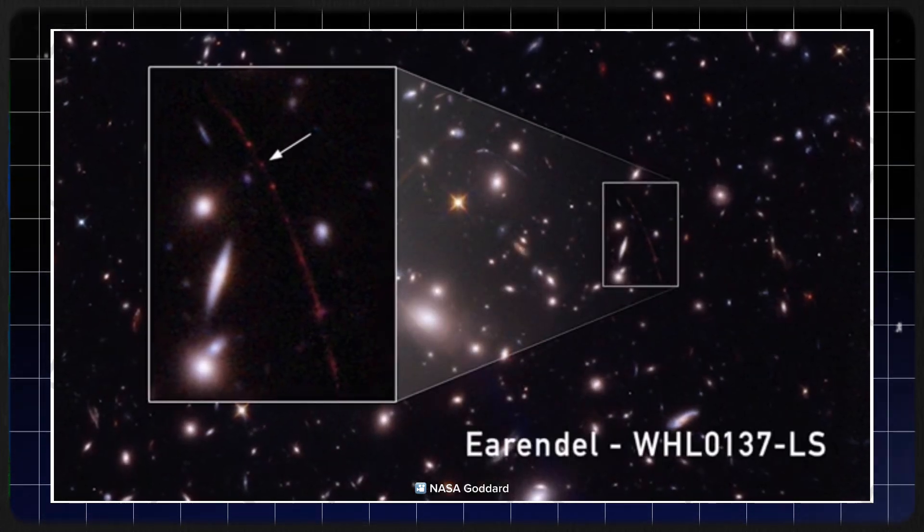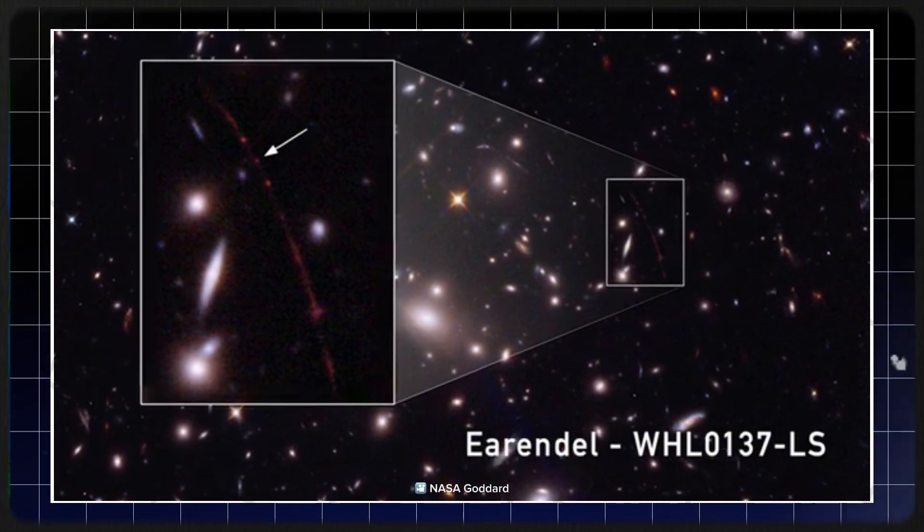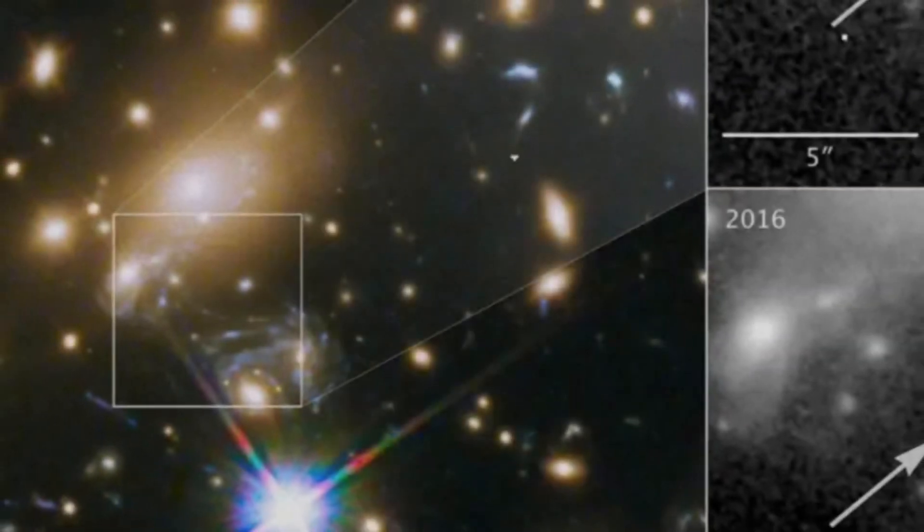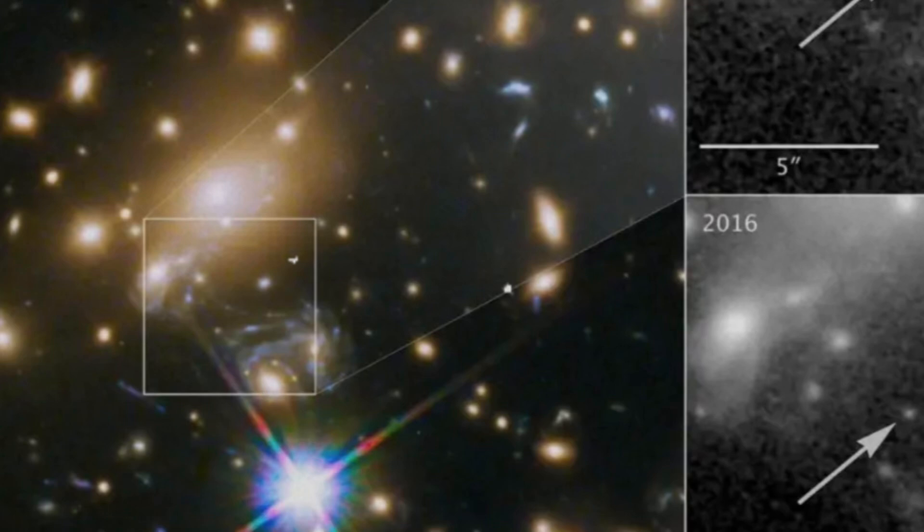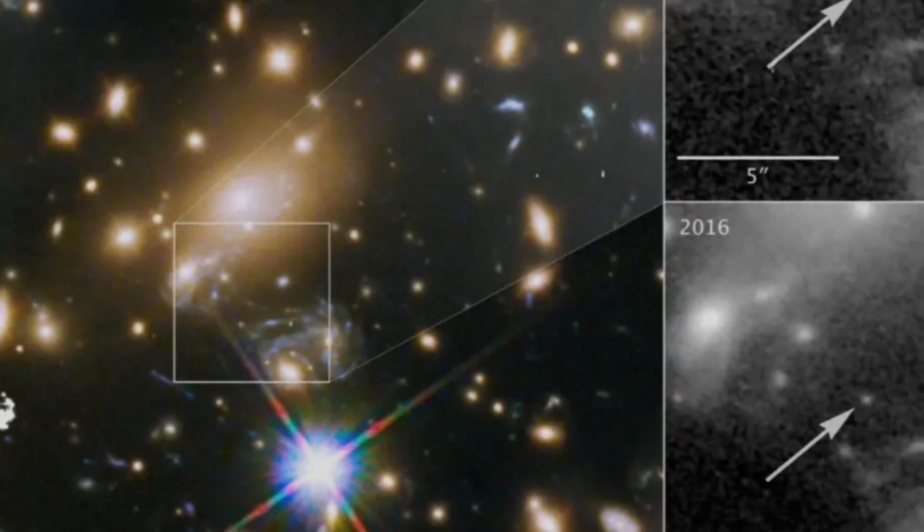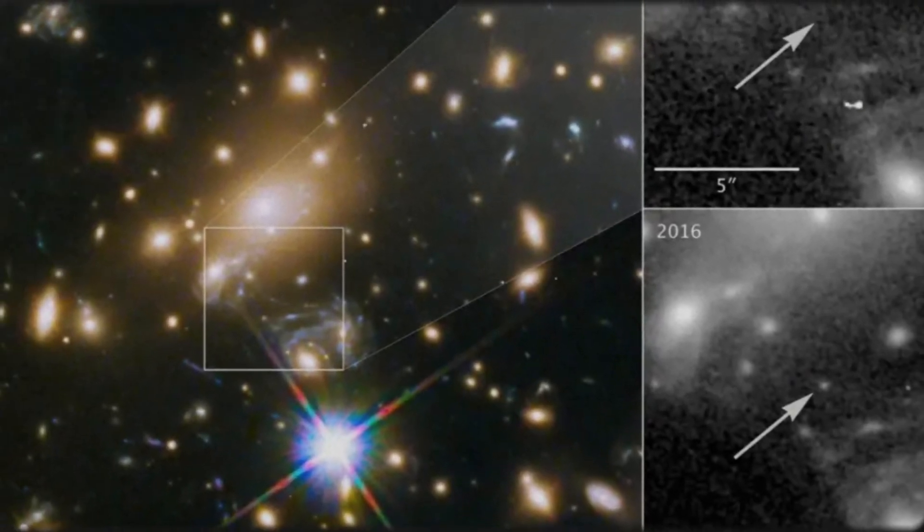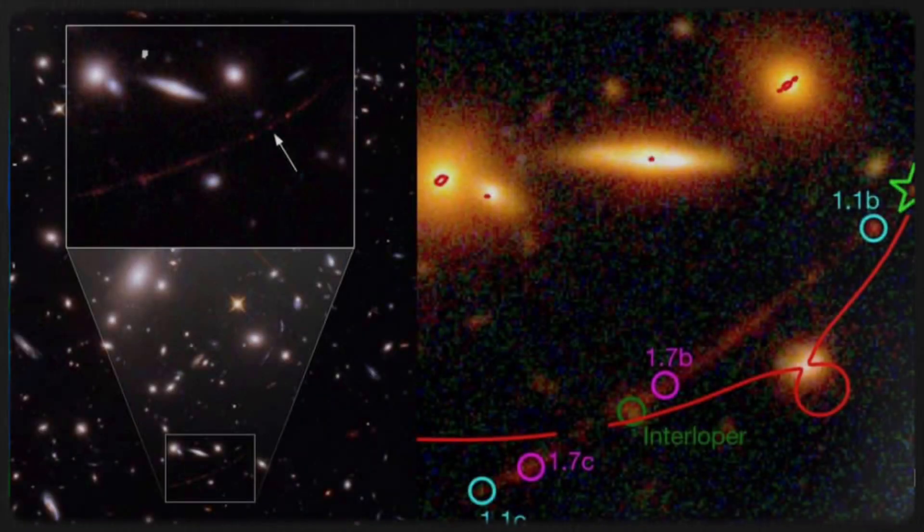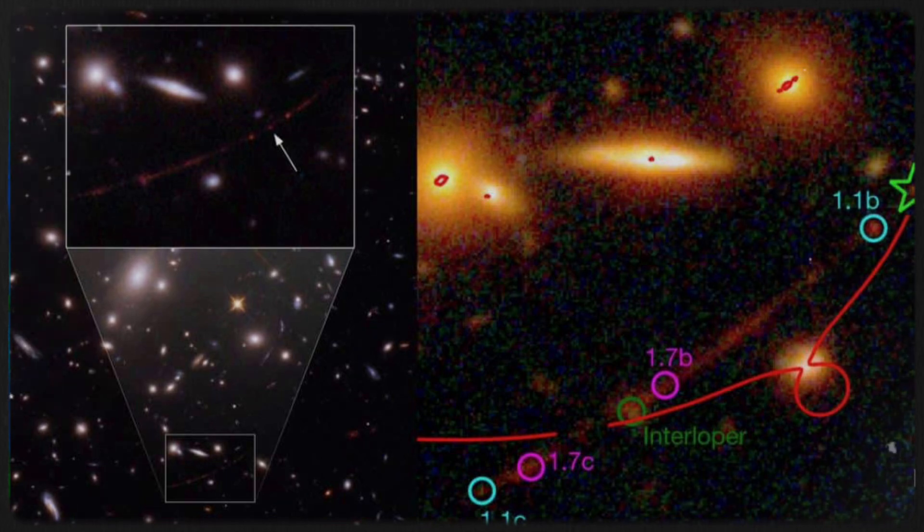While it's not surprising that a star existed 13 billion years ago, the real marvel lies in our ability to observe it from Earth. The star's light traveled across 13 billion light years of space and time before reaching Hubble's mirror, showcasing a remarkable journey. Hubble's detection of Eärendel, the universe's oldest known single star, marked one of its final monumental achievements.